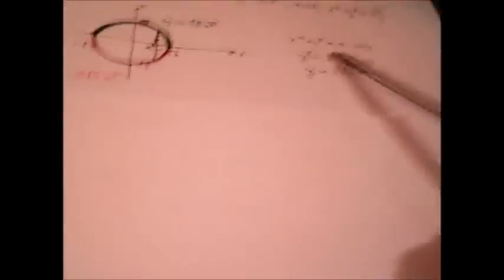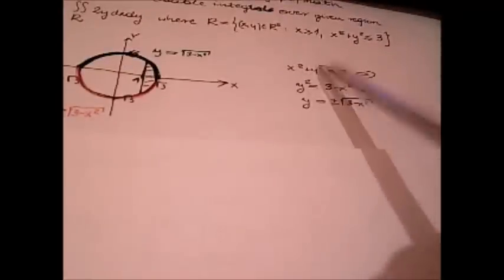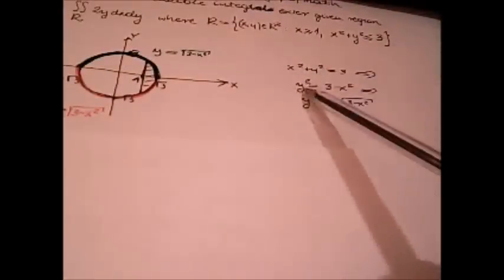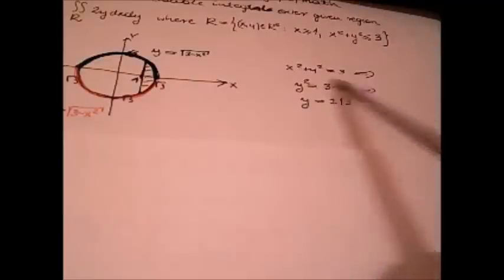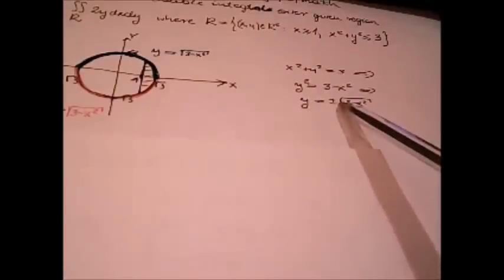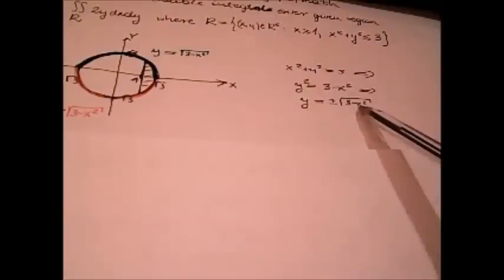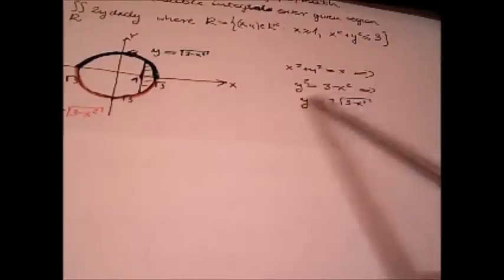x squared plus y squared equals 3. This is equation. From this we obtain y squared equals 3 minus x squared, and from this we obtain y equals plus minus square root of 3 minus x squared. This is equations of semicircle.